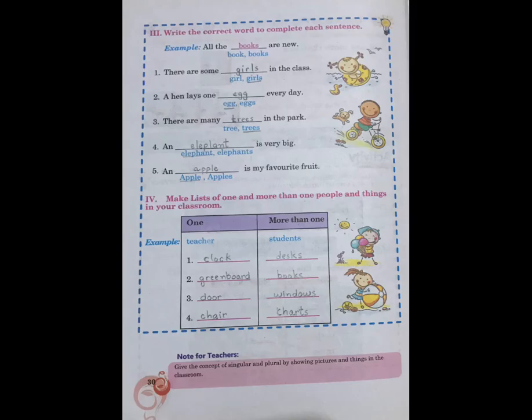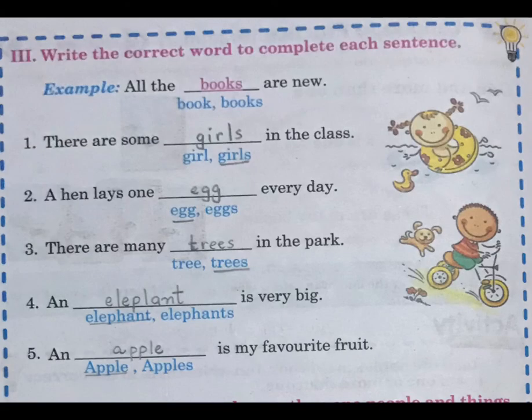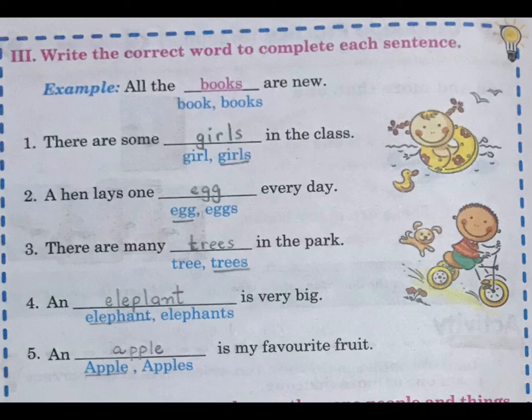Now look at page number 30. Activity number 3: Write the correct word to complete each sentence. Example: All the books are new. Number 1: There are some girls in the class. Number 2: A hen lays one egg every day. Number 3: There are many trees in the park. Number 4: An elephant is very big. Number 5: An apple is my favourite fruit. I have done it for you.